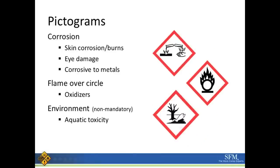The next pictogram is corrosion, meaning it will eat metal — and odds are it will probably eat your hand as well. Corrosion means it could cause skin corrosion, eye damage, or may also ruin other metals. The next one is a flame over a circle, used on any oxidizer chemicals. The final one is non-mandatory and means that chemical can impact the environment — it may cause aquatic toxicity. Care should be taken when using this chemical outdoors or near rivers, streams, or lakes.